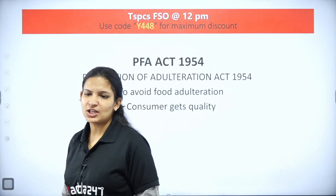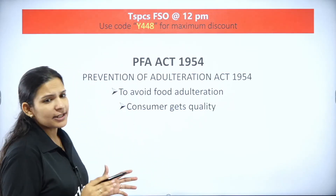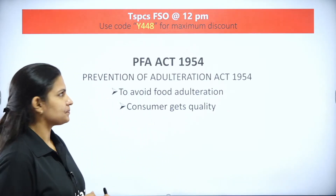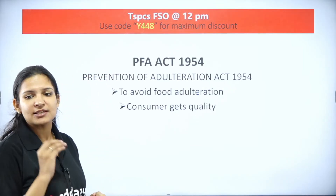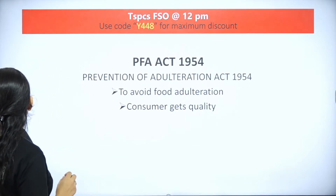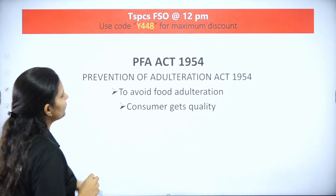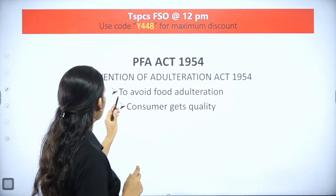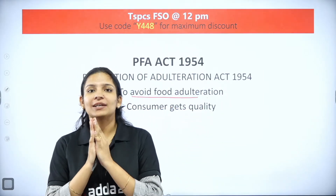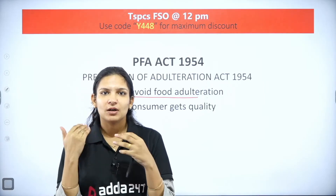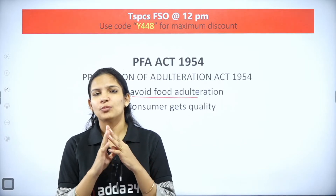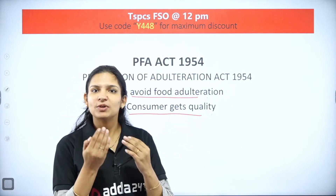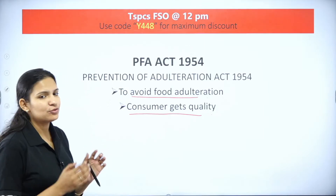Because of this concern, the government acted and the Prevention of Food Adulteration Act came in 1954 - in short, known as PFA. The full form is Prevention of Food Adulteration Act 1954. Its two main objectives are: to avoid food adulteration, and to ensure consumers get good quality food without negative effects on their health.